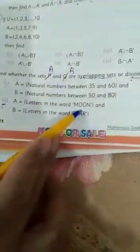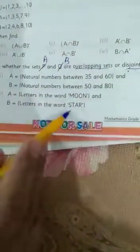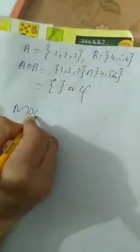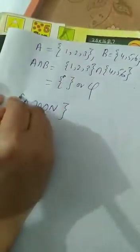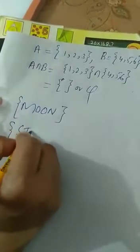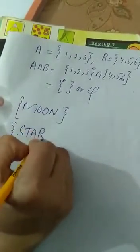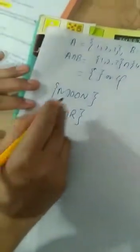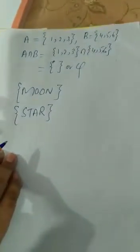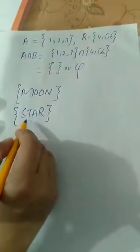Letters in the word moon and letters in the word star. Let's see, letters moon and letters star. There is no alphabet same. There is no intersection between them.